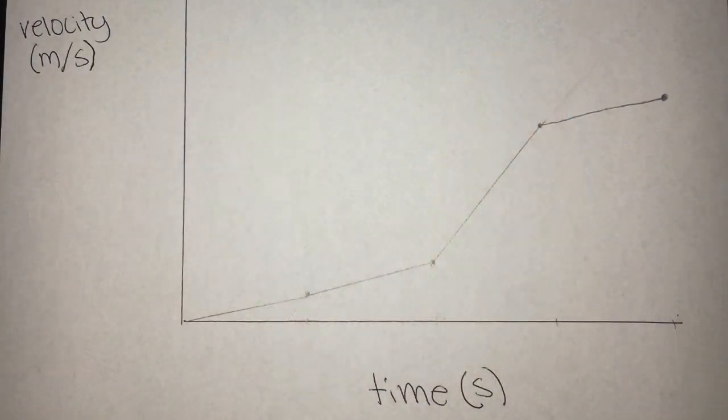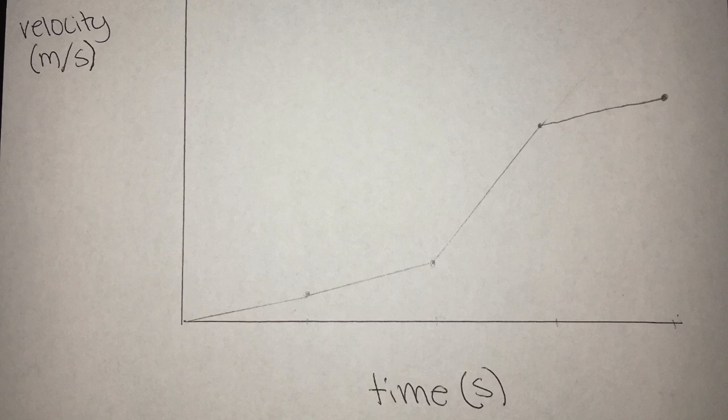In this acceleration graph, a volleyball player takes a four-step approach. The first step is the slowest step, accelerating very little on the second step. The third step accelerates greatly from the second, as shown in the graph. The fourth and final step is slightly faster than the third. The acceleration of the approach continuously increases as the player prepares to hit.